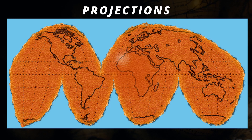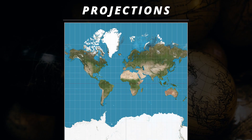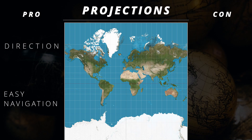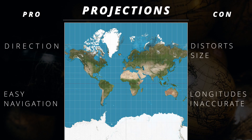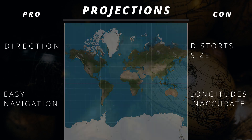Have you ever tried to peel an orange and make it flat? Well, congratulations — if you have, you have participated in the art of mapmaking, also known as cartography. We have the most famous of them all: the Mercator Projection. This map is known for its direction and navigational purposes, but it distorts size, especially at the northern and southern poles. If you were to look at a normal globe, notice how at the northern pole the longitudes meet, whereas the Mercator Projection separates them at the poles.